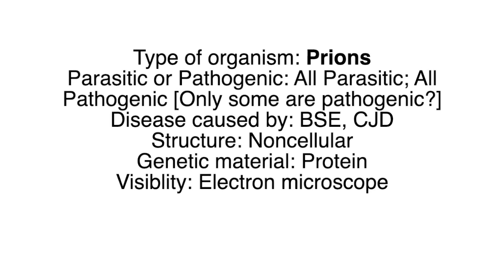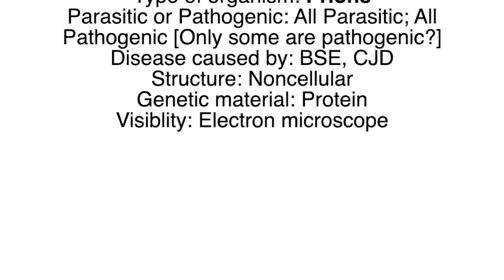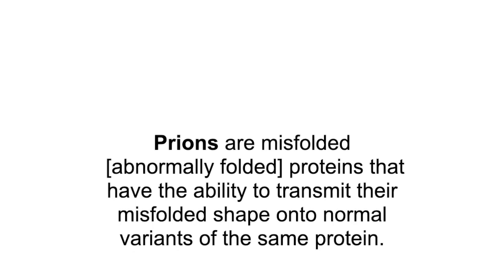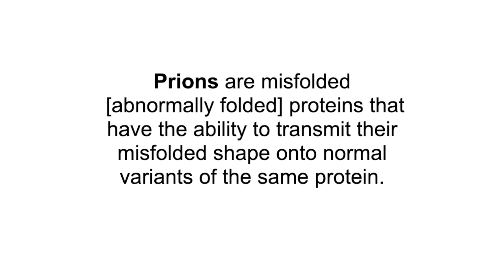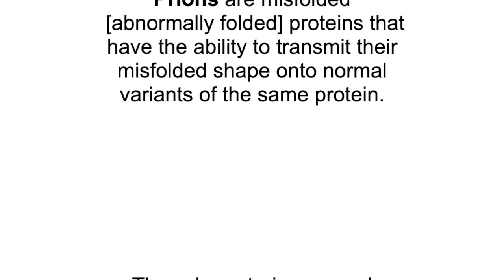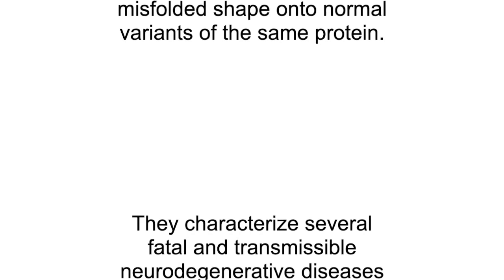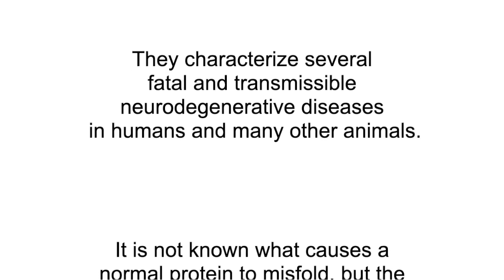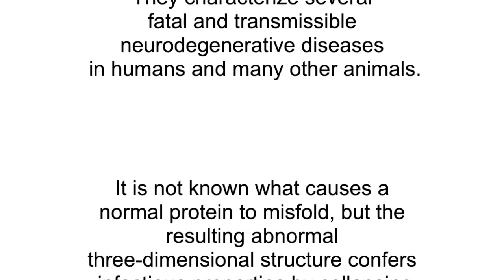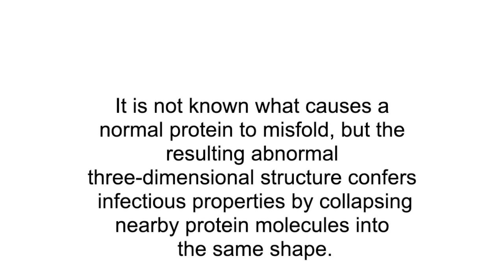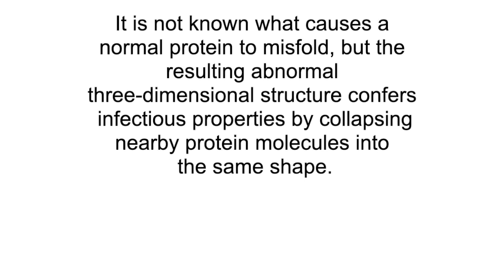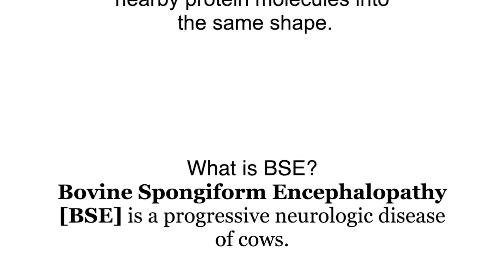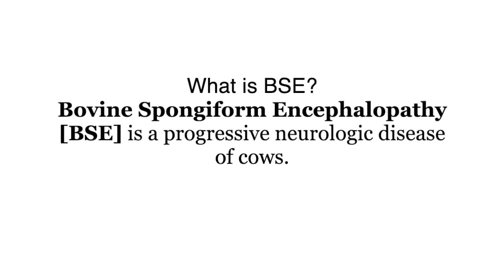Type of organism: prions — all parasitic, all pathogenic. Diseases caused include BSE and CJD. Prions have a non-cellular structure; their material is protein, visible by electron microscope. Prions are misfolded proteins that have the ability to transmit their misfolded shape onto normal variants of the same protein. They characterize severe, fatal and transmissible neurodegenerative diseases in humans and many other animals. It is not known what causes a normal protein to misfold, but the resulting abnormal three-dimensional structure confers infectious properties by collapsing nearby protein molecules into the same shape.